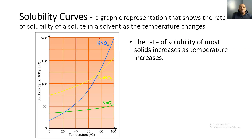A solubility curve is a graphic representation that shows the rate of solubility of a solute in a solvent as the temperature changes. The rate of solubility of most solids increases as temperature increases, and this makes sense if we go back to a cooking analogy.